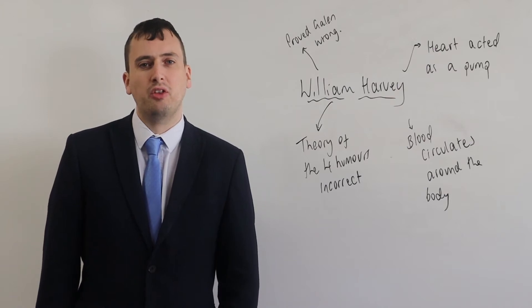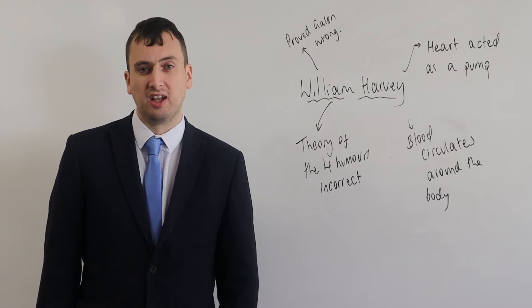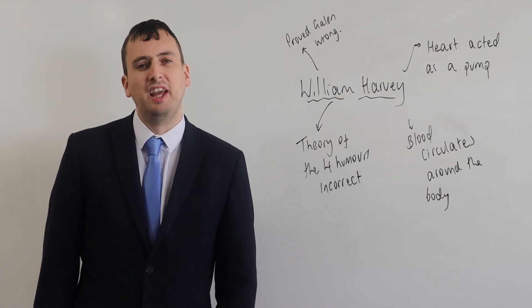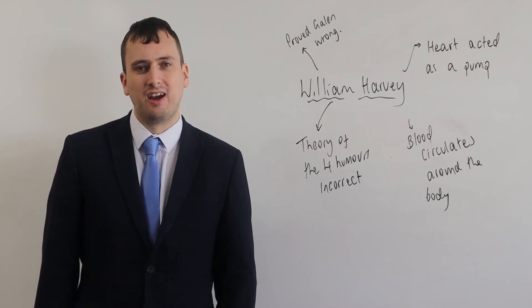Galen believed that blood was consistently being produced by the liver and that the liver produced blood to replace blood which was being burnt off by the body through physical activity. Galen also believed that blood passed through the body through invisible channels in the heart.